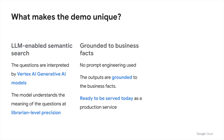Second, grounded to business facts. In this demo, we didn't try having the LLM memorize the 8 million items with complex and lengthy prompt engineering. Instead, we attached the Stack Overflow dataset to the model as external memory using vector search and used no prompt engineering. This means the outputs are all directly grounded to the business facts, not artificial output from the LLM. So the demo is ready to be served today as a production service with mission-critical business responsibility.